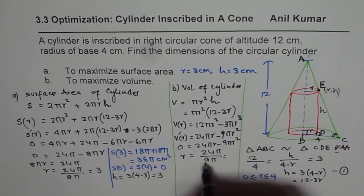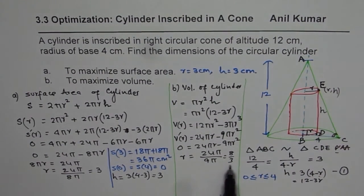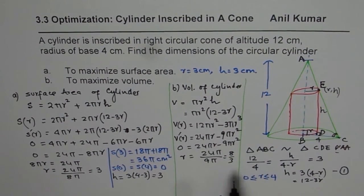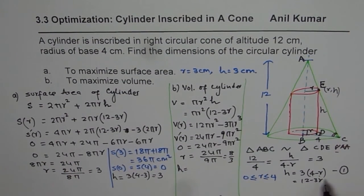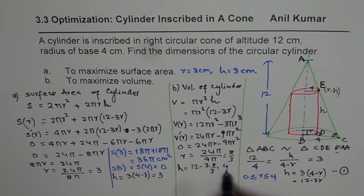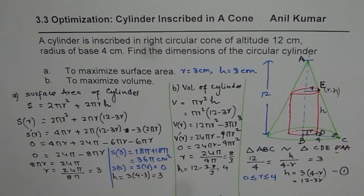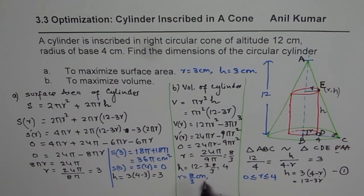So radius will be 8 over 3 for maximum volume. You can substitute 8 over 3 in this expression to find height. So height will be equals to 12 minus 3 times 8 over 3, which is 8, so that means 4. So for maximum volume, the solution is R equals to 8 over 3 centimeters and height is 4 centimeters.